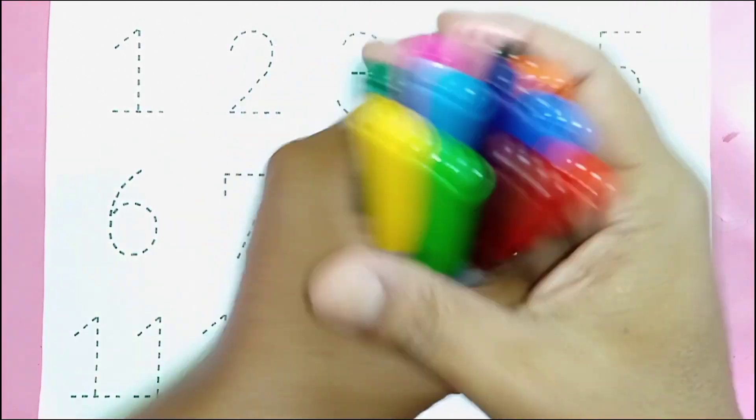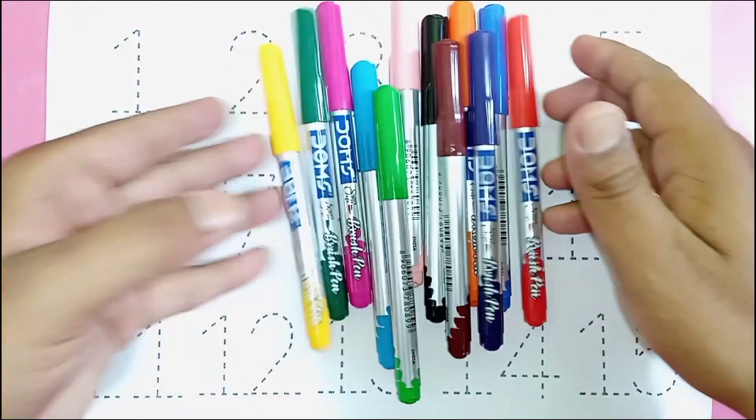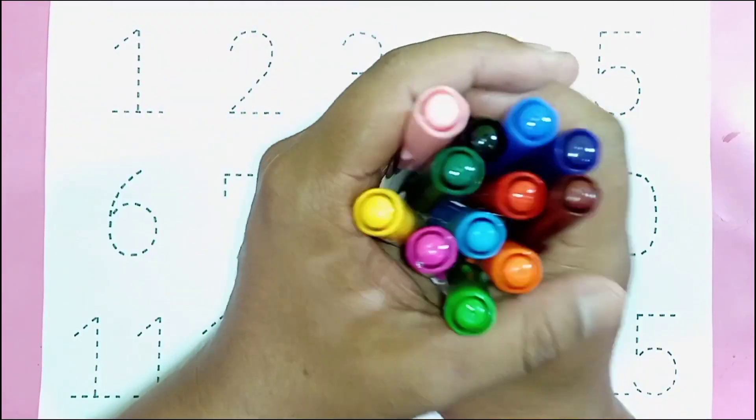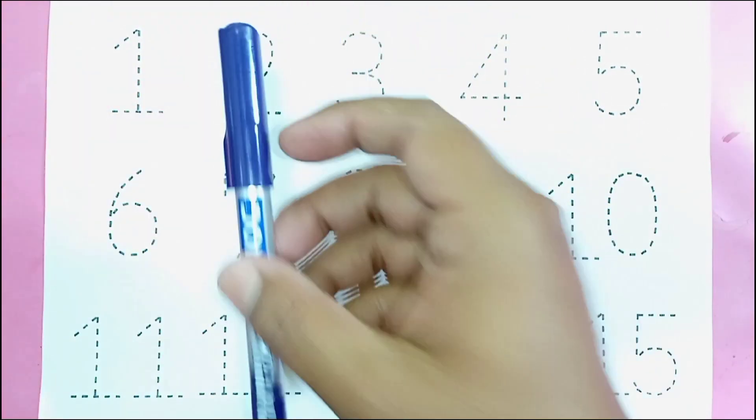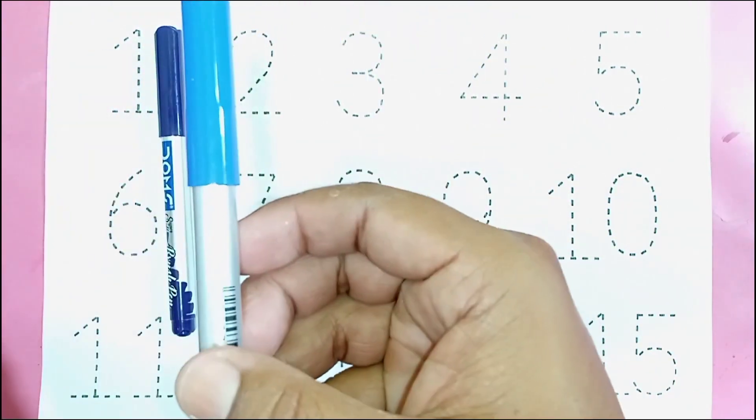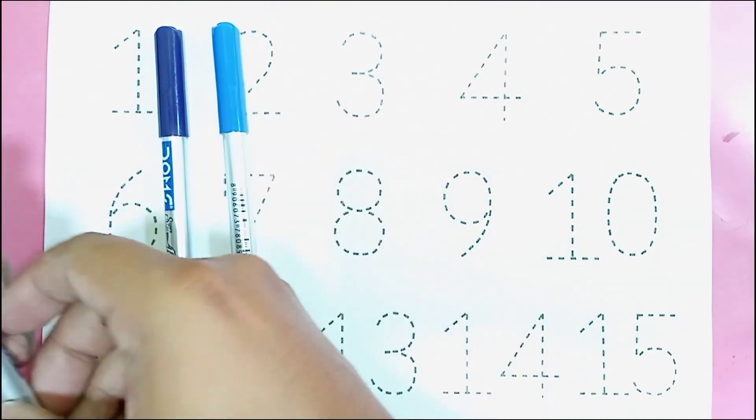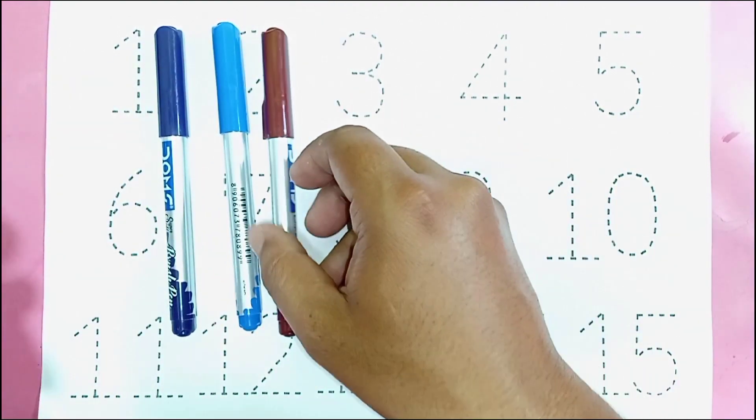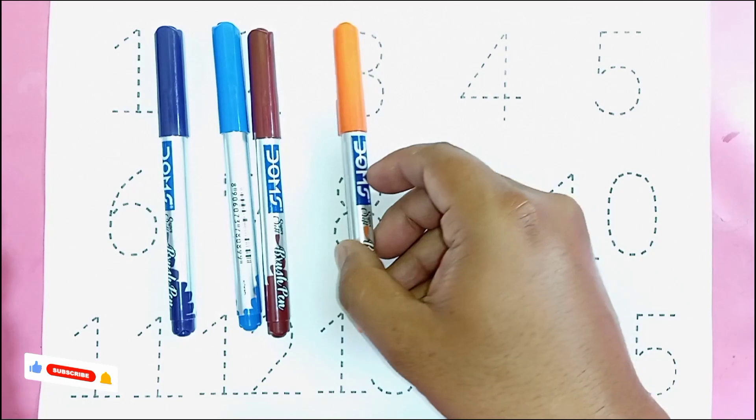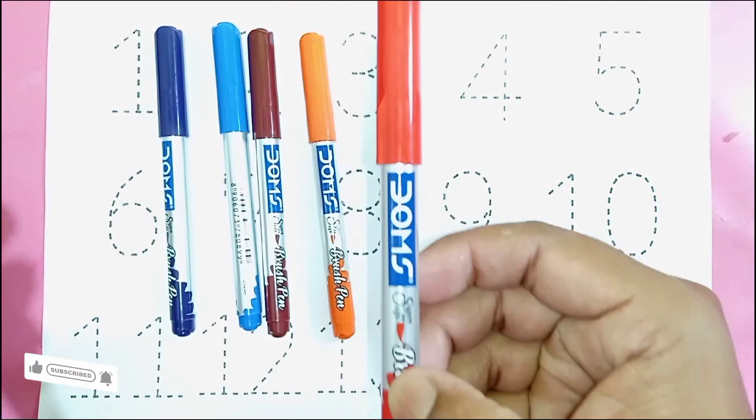Hello kids, let's learn some colors. Violet color, blue color, brown color, orange color, red color.